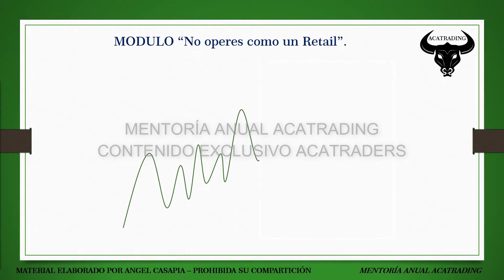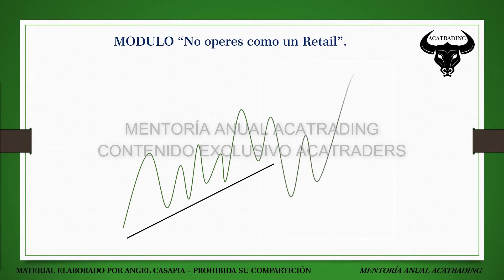Va a activar órdenes o va a tocar stop loss que están por encima de los máximos y por debajo de los mínimos, que justamente uno establece cuando traza lo que comúnmente se conoce como una línea de tendencia. En base a todos los conceptos estudiados en lecciones anteriores —equal highs, equal lows— nuestro entendimiento va a estar en que cuando veamos esta ruptura, el retail trader lo primero que hace es vender la ruptura de la línea de tendencia o vender el retesteo de la misma.